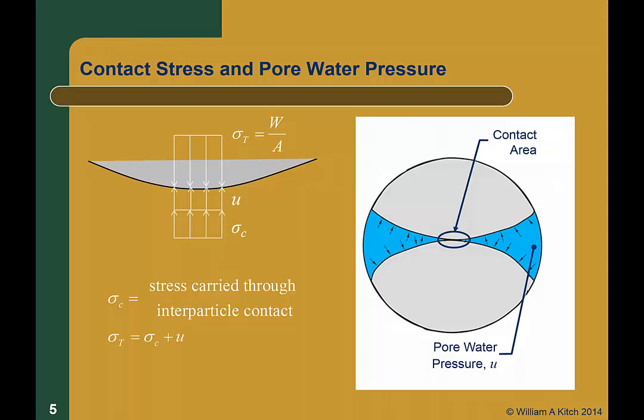The total stress, sigma T, is the sum of the inner particle stress, sigma C, and the pore water pressure, U. Or we can rewrite the equation as sigma C equals the total stress minus the pore water pressure. This division of the total stress into the portion carried by pore pressure and the portion carried by the soil skeleton through the inner particle contacts is at the heart of the concept of effective stress.